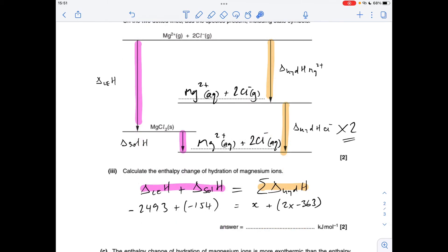So we'll put the numbers in: the lattice enthalpy plus the enthalpy change of solution equals the one we want to find out. I'm just saying that's x plus two times the hydration enthalpy for the chloride ion, because you've got two chloride ions in your cycle. So all we need to do now is solve for x.